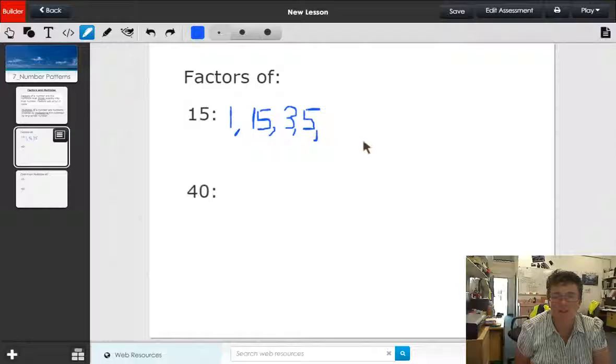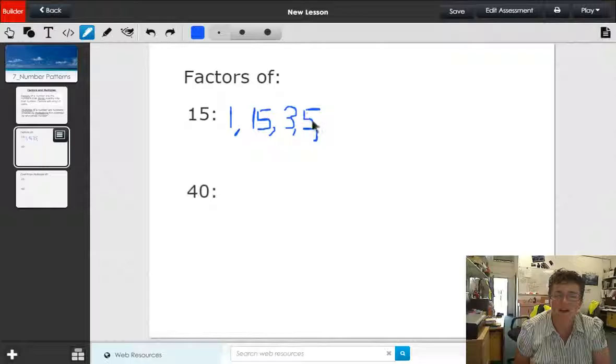Four is not a factor of 15. Five is a factor of 15 because five times three, but we've already got to five. So when you get to a number that you've already done and it works back, that pretty much means that you've finished your factors. So the factors of 15 in ascending order are one, three, five, and 15.